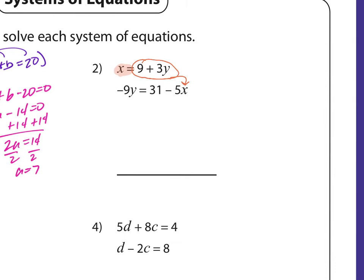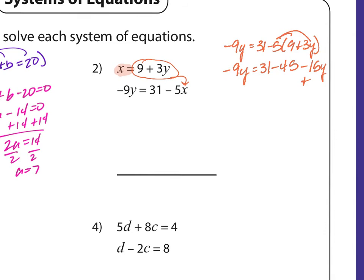So I get: negative 9y equals 31 minus 5 times (9 plus 3y). Distributing gives me: negative 9y equals 31 minus 45 minus 15y. Then I add 15y to both sides.